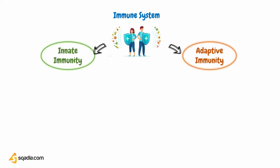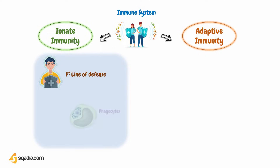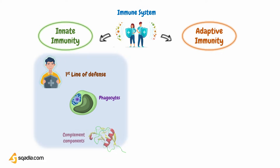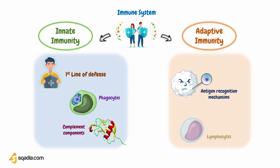The innate immune system is the first line of defense for the body, and it uses nonspecific cells such as phagocytes, and molecules such as complement components, to attempt to eliminate invading organisms. This is followed by the antigen-specific mechanisms used by the adaptive immune system, which include antigen recognition molecules and specific sets of lymphocytes that not only aid in resolving current infection, but create memory for future protection as well.